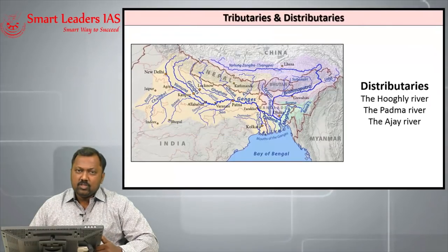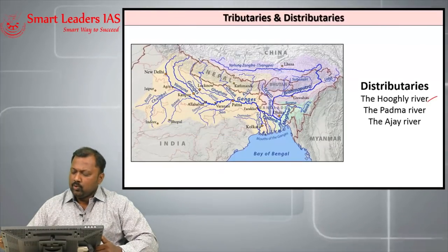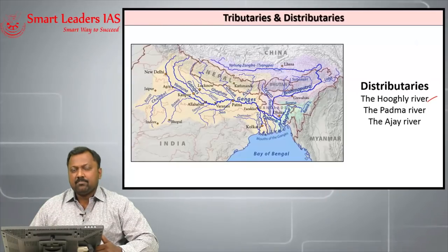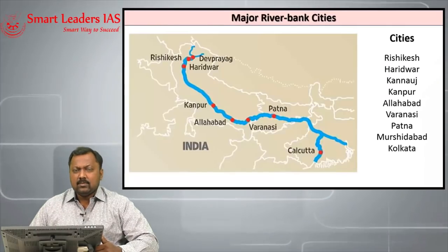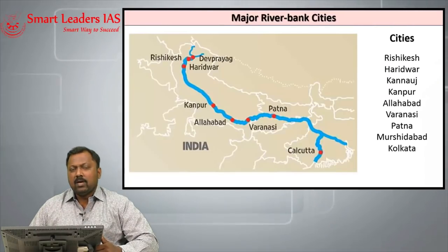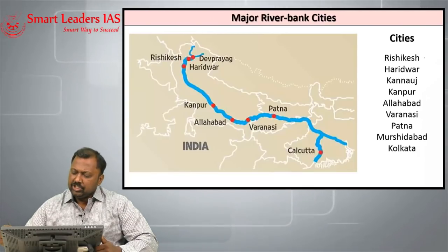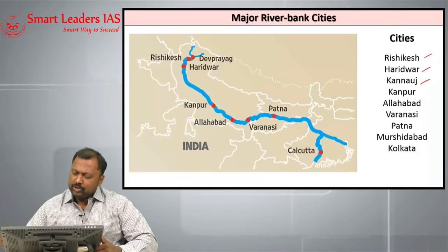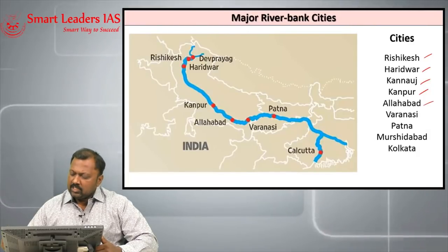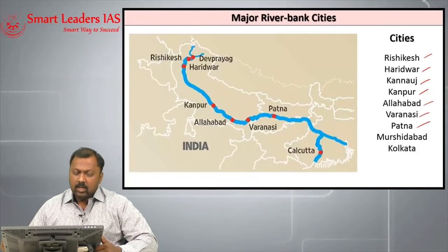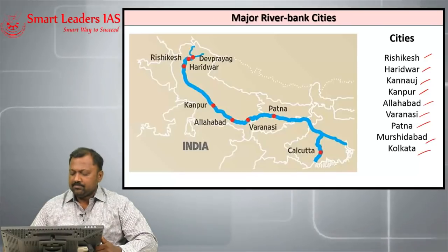The distributaries of river Ganga include Hooghly, Padma and Ajay. The important cities located on the banks of this Ganga river system include Rishikesh, Haridwar, Kannauj, Kanpur, Allahabad, Varanasi, Patna, Murshidabad and Kolkata.